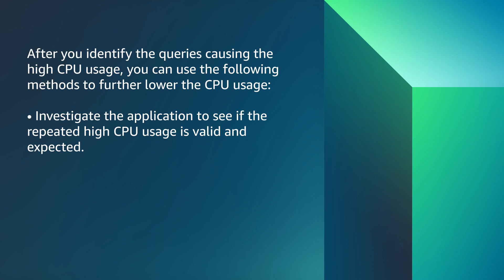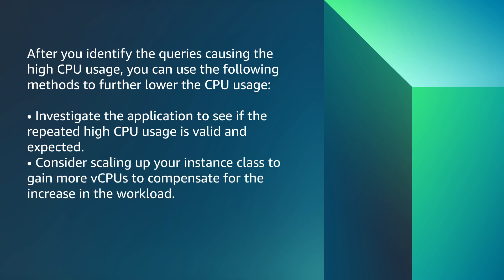If not, investigate from the application to see if the repeatedness is valid. If your workload is meaningful and you don't find any tuning opportunities, consider scaling up your instance class to gain more vCPUs to compensate for the increase in workload. So now you know how to troubleshoot high CPU utilization issues in Amazon RDS for PostgreSQL or Aurora PostgreSQL compatible. Thanks for watching and happy cloud computing from all of us here at AWS.